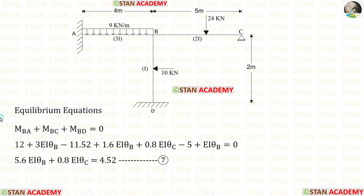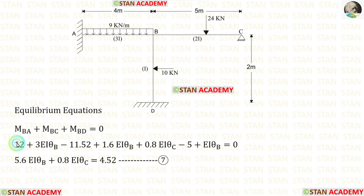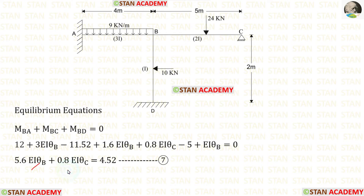We have made one equilibrium equation, but we need one more. The second equilibrium equation is made at joint B, where there are three moments: MBA, MBC, and MBD. When we add these three, we get zero. We have already made the slope deflection equations for MBA, MBC, and MBD. Adding them and keeping EAθB and EAθC on the left side, we label this equation number 7.